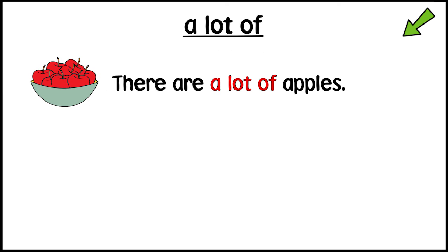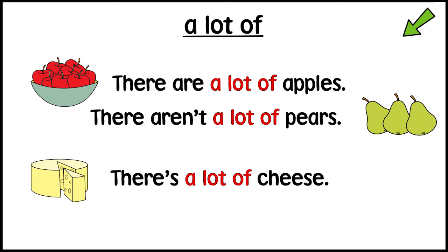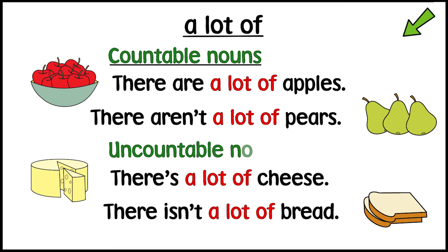There are a lot of apples. There aren't a lot of pears. There's a lot of cheese. There isn't a lot of bread. We can use a lot of with countable and uncountable nouns.